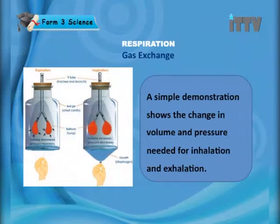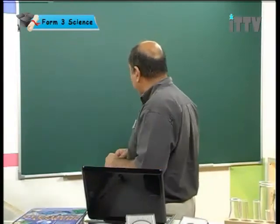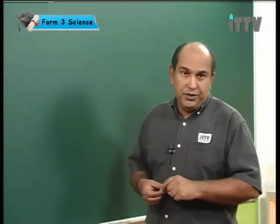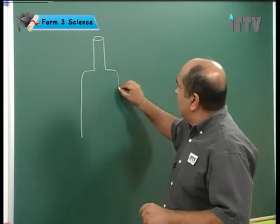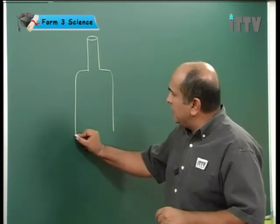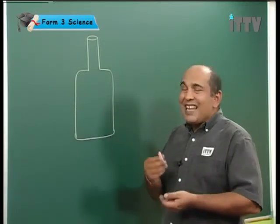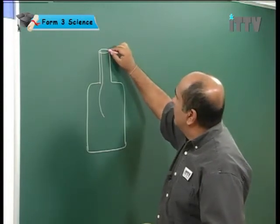A simple demonstration shows the change in volume and pressure needed for inhalation and exhalation. For this demonstration, all we need is a bottle and two balloons. Take any plastic bottle and cut the bottom off. Take a balloon, cut it in half, and place it over the bottom opening. Take another balloon and place it at the top inside the bottle so that the balloon hangs open inside like so.